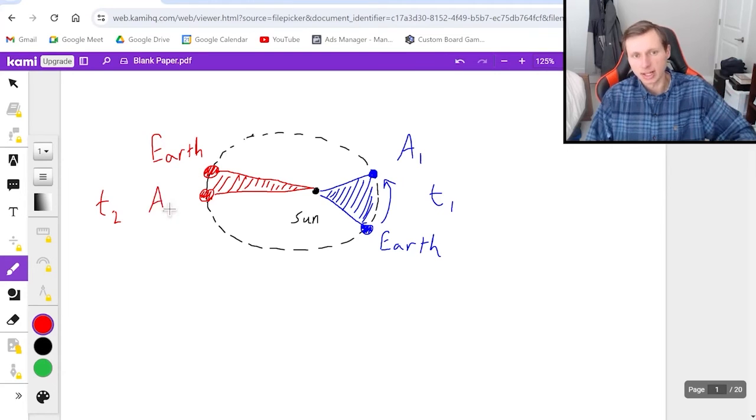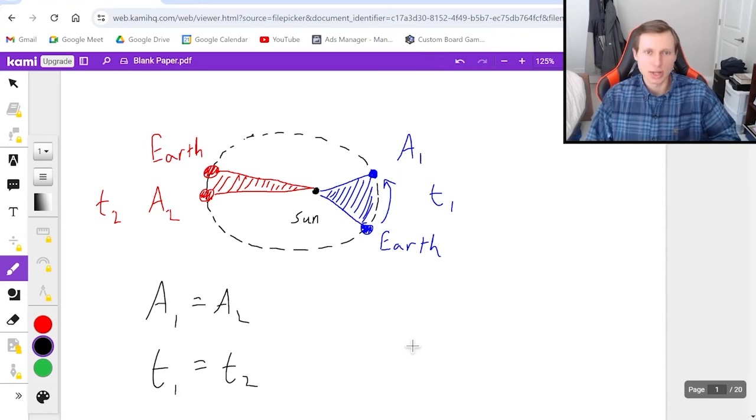So in other words, if I label this A2, then what I'm saying is A1 equals A2, and T1 equals T2. So that's the first part of Kepler's second law.